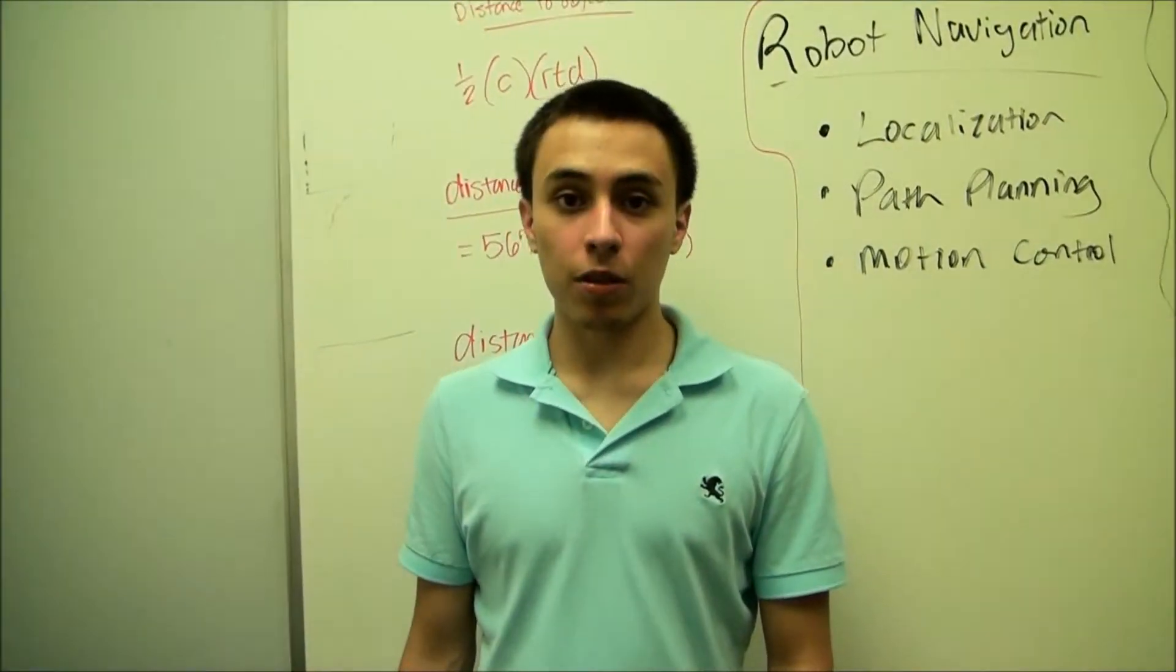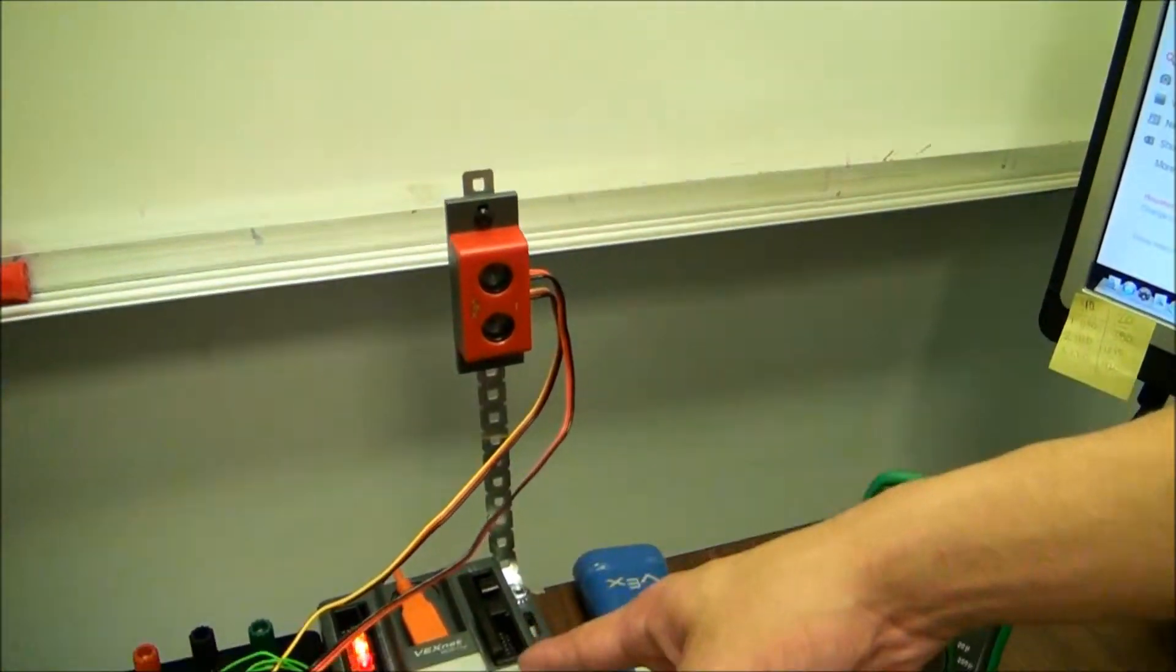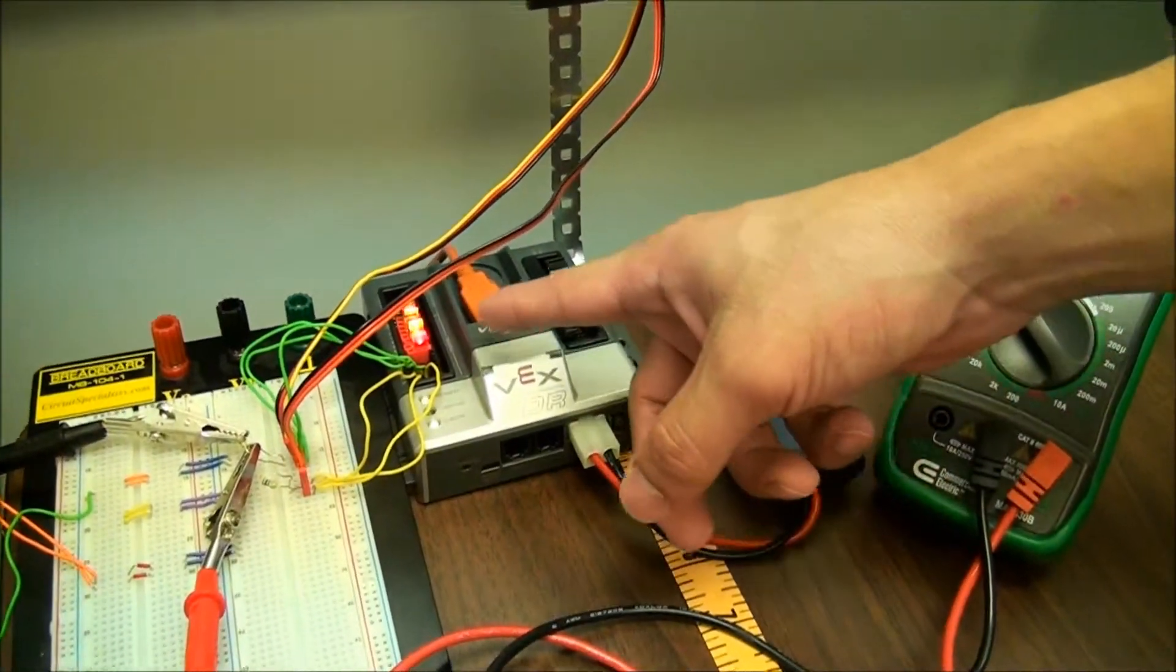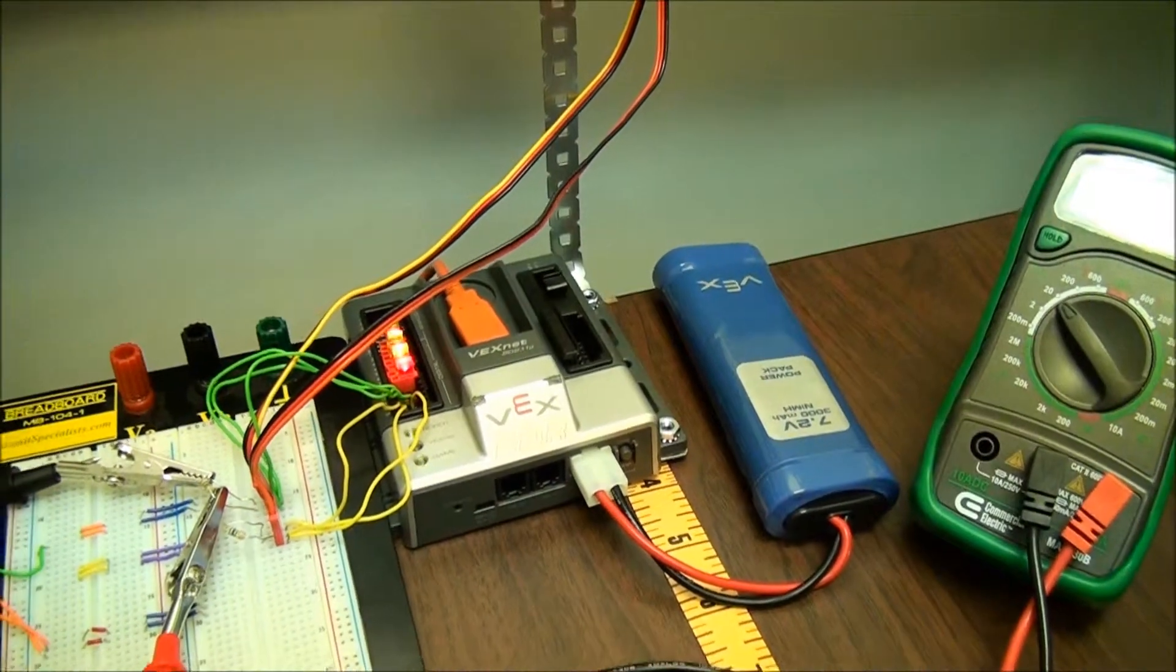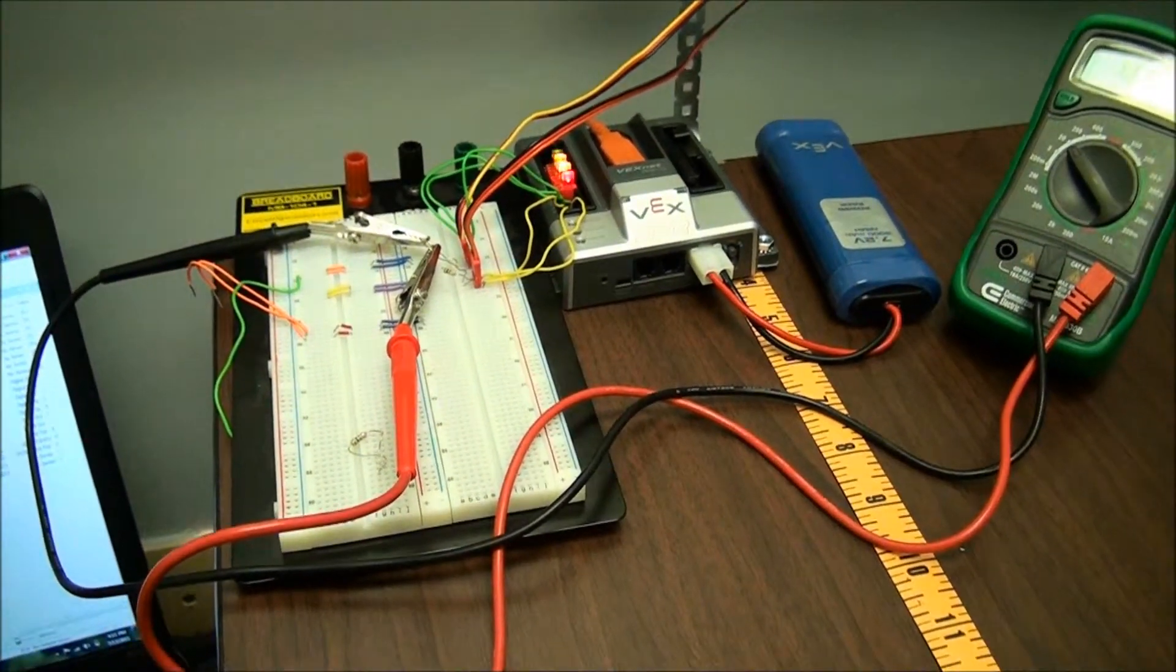This is the test for the ultrasonic sensor from VEX Robotics. Here we have the ultrasonic sensor mounted, hooked up to the microcontroller. We have eight LEDs hooked up as well, and we have this hooked up to the breadboard so we can test the voltages.